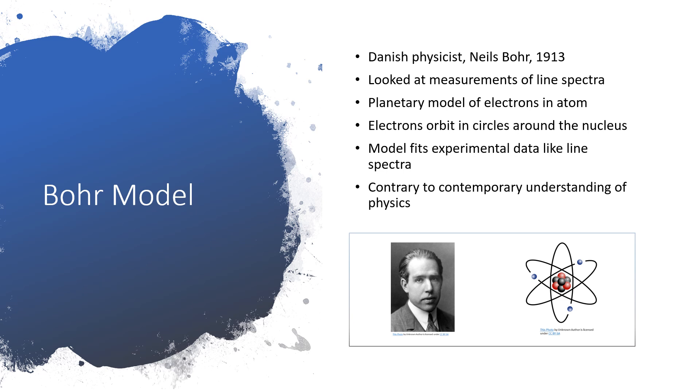Now his model fit the experimental data beautifully in terms of all of these line spectra, but it really was contrary to the understanding of charged particles from contemporary physics because according to Maxwell's equations, a positive nucleus should attract a negative electron. So why would an electron be stable in a circular orbit? Well, it shouldn't be. According to contemporary physics, it should actually spiral into the nucleus.